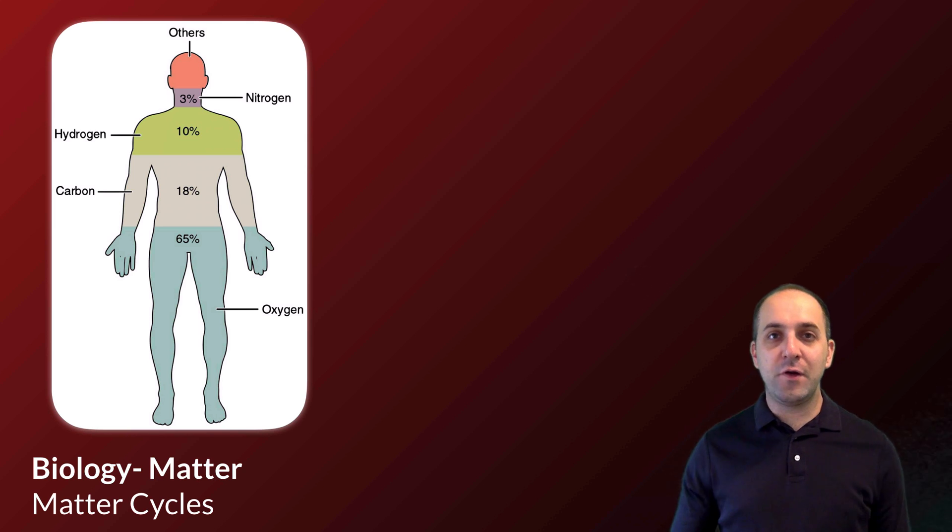Hi, and welcome to our second unit of our course, our unit on matter in biological systems. To start things off, we're going to talk a little bit about where our atoms come from and where they go. We're going to talk about matter cycles, and I thought I'd start with this image which shows the percentage composition of a typical human being by element.